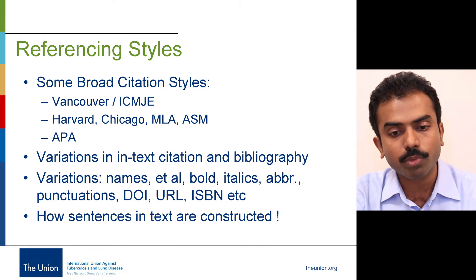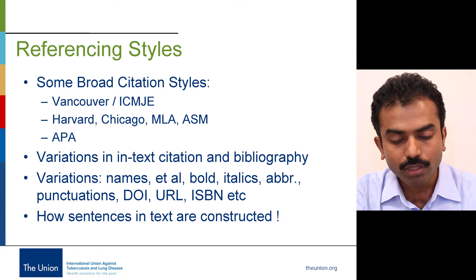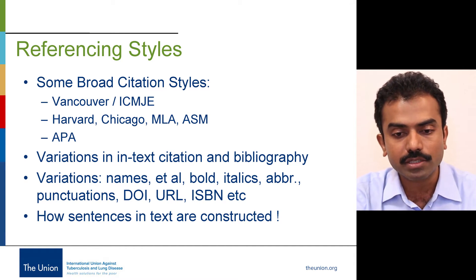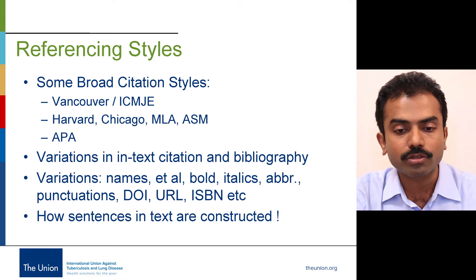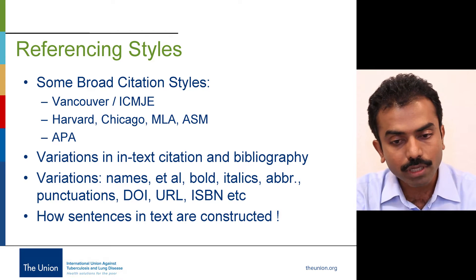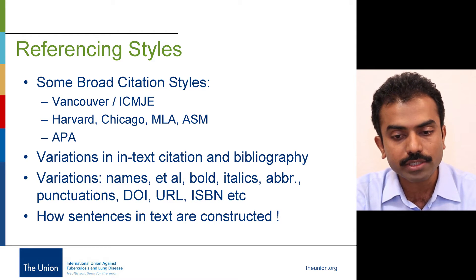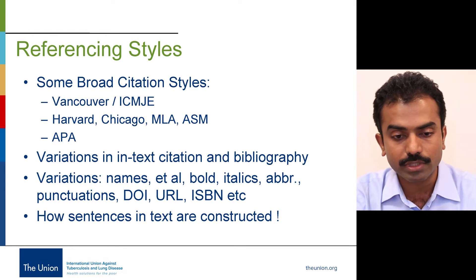Now let's talk a little bit on referencing styles. There are two important and broad categories for me. One is Vancouver — the most common citation style used in medical journals, also endorsed by the International Committee of Medical Journal Editors. The other one is the Harvard style, more often seen in social sciences and other kinds of journals, but some medical journals also use this. These are the two broad citation styles.